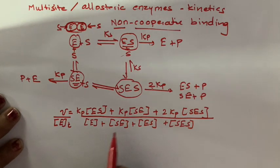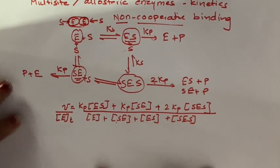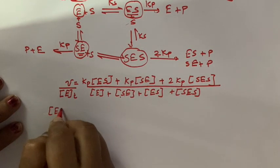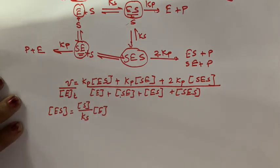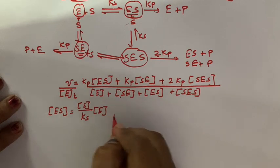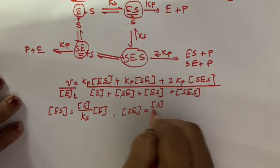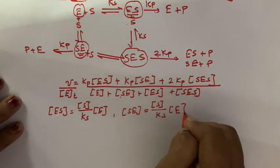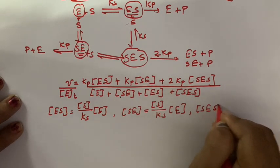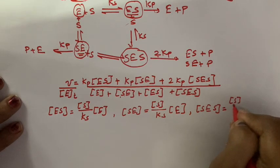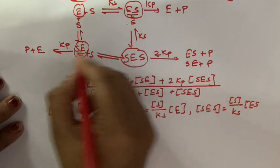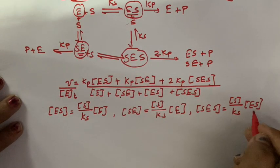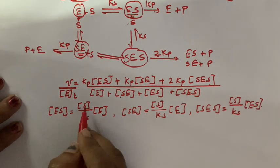Now we replace the terms Se, Es, and S-Es with respect to E so that we can cancel it out. Es = [S]/Ks × [E]. You can refer to the Michaelis-Menten videos for how this is derived. Se = [S]/Ks × [E].